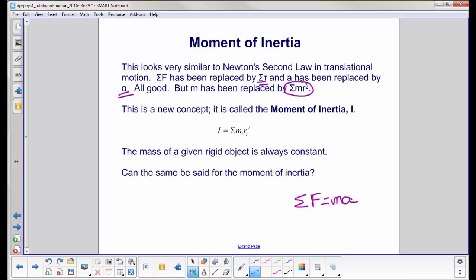This is a new concept. It is called the moment of inertia. The moment of inertia of an object, I, is equal to the sum of all the little pieces of mass that make up that object times their distance from the rotation axis squared.